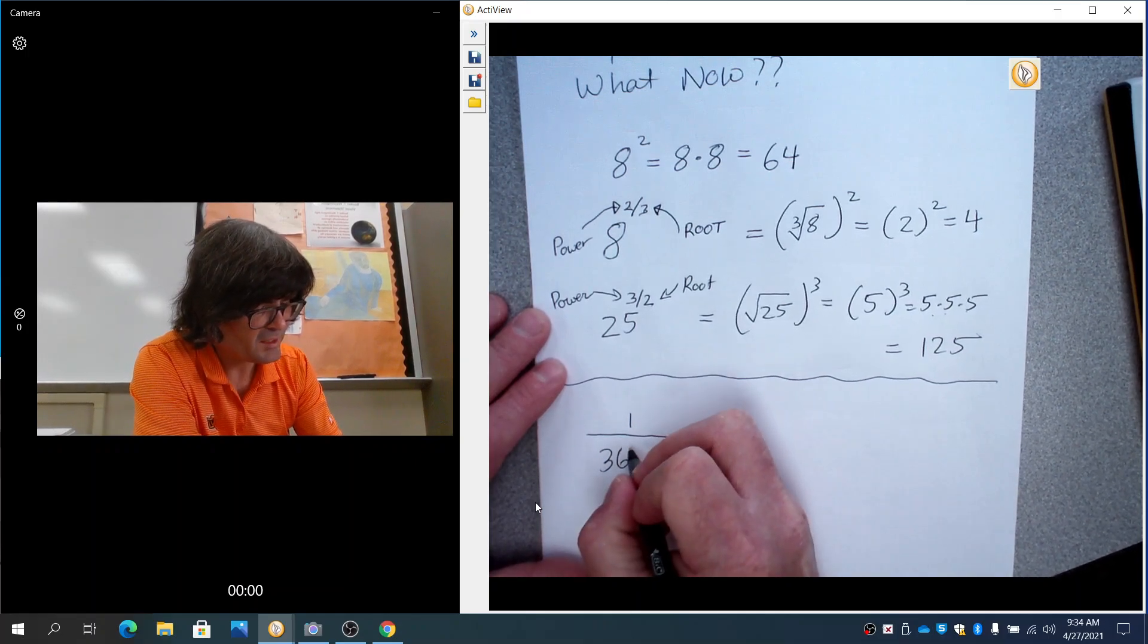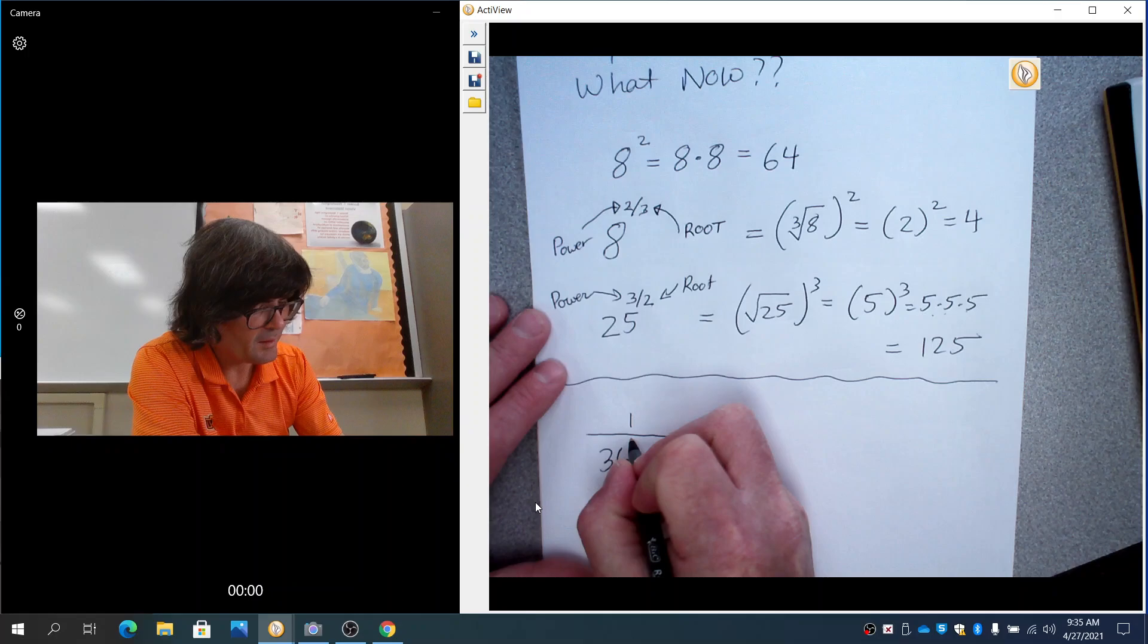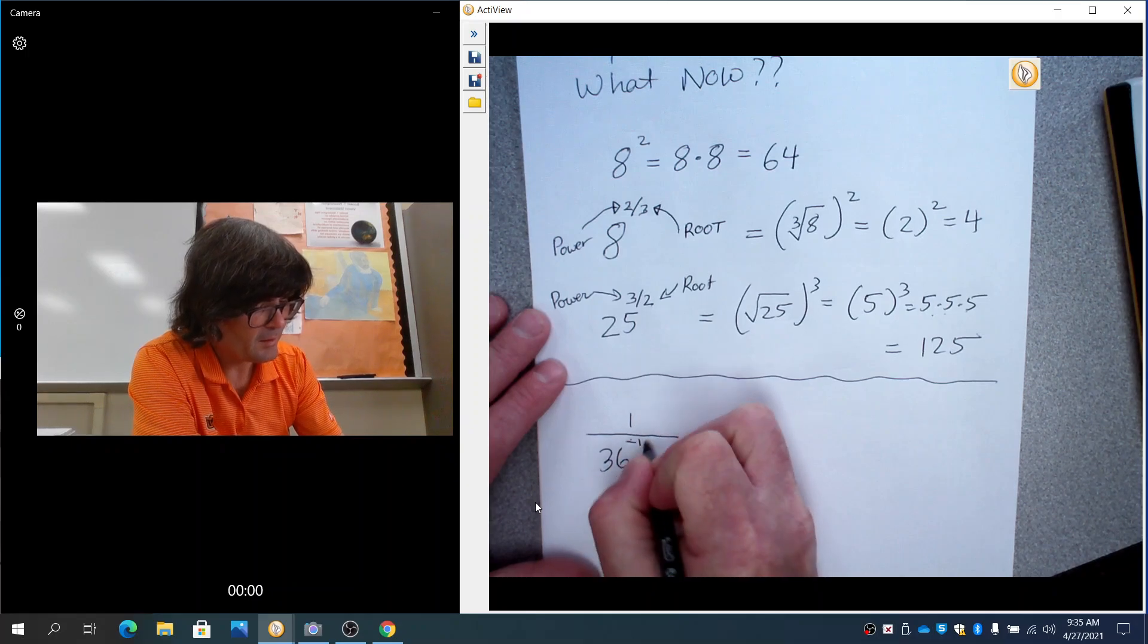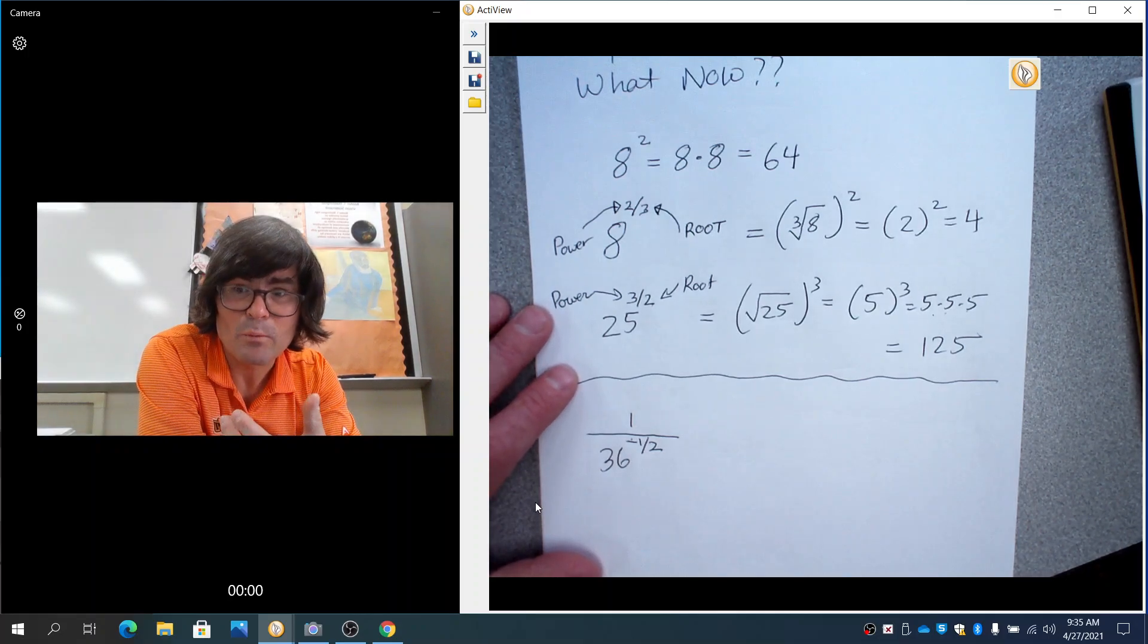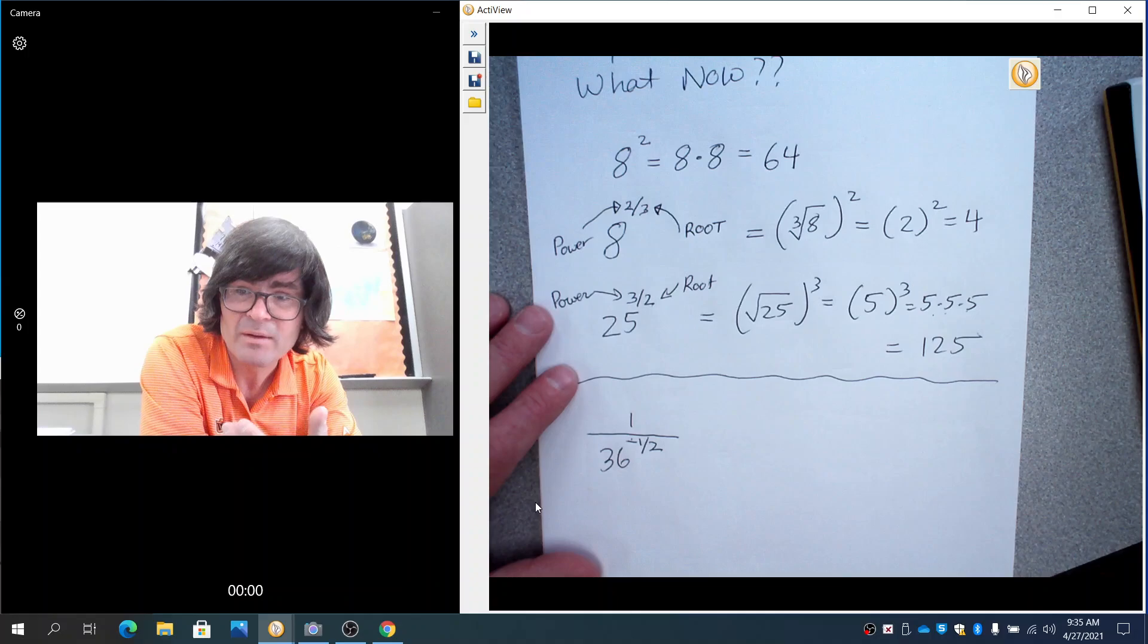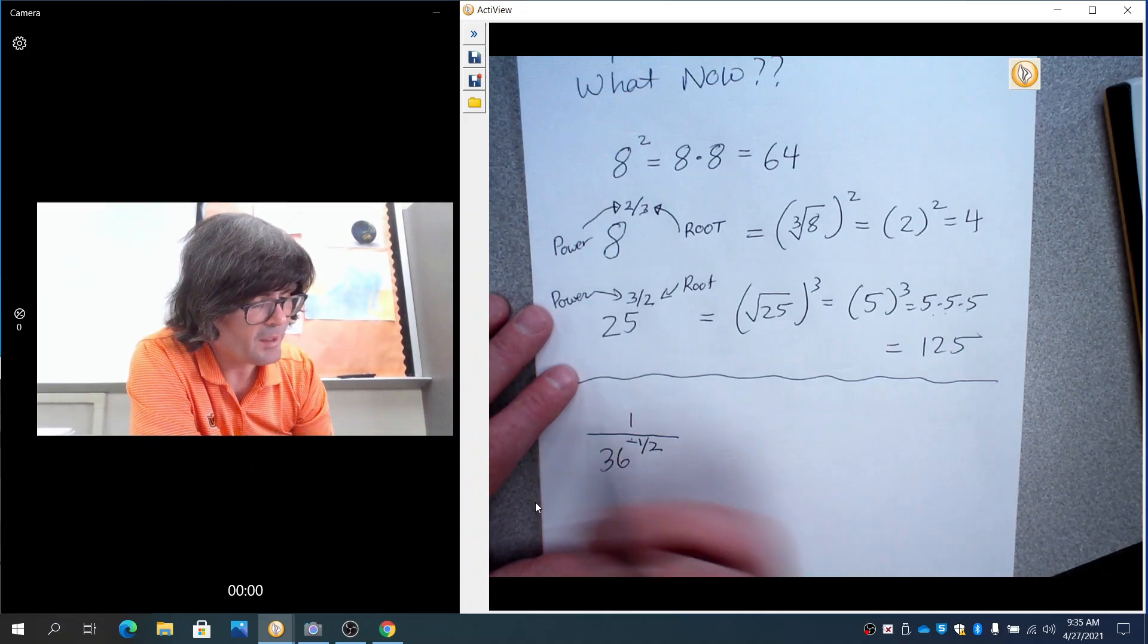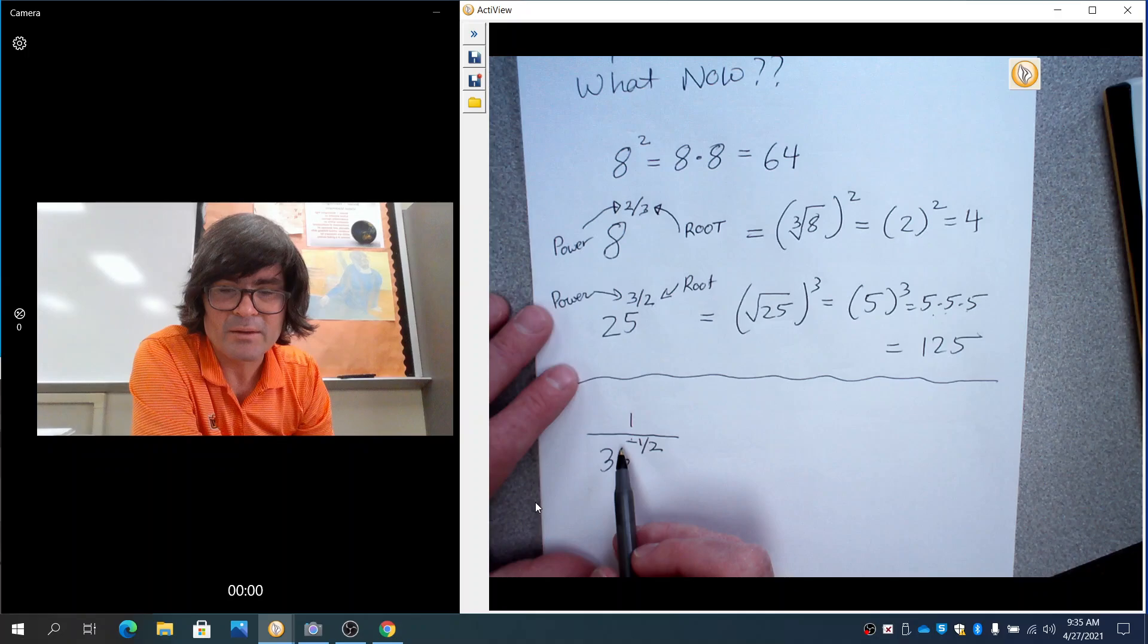1 over 36 to the negative 1 half. Now, something like a 1 half power is pretty common as an exponent. The bottom is the root. The top is the power.